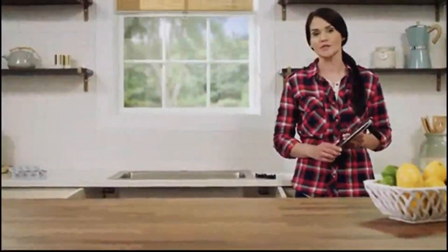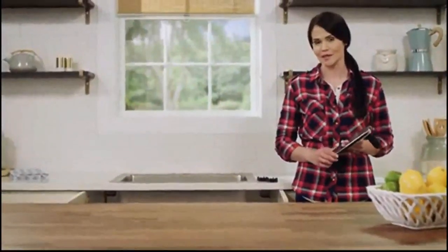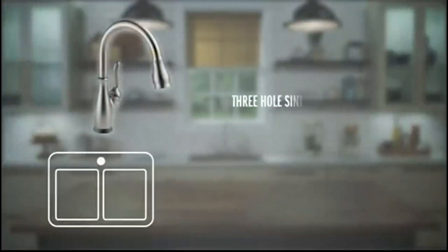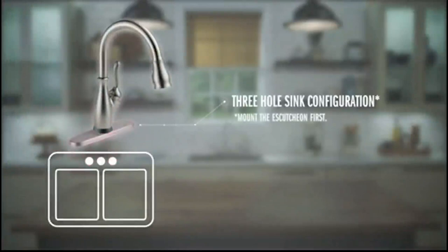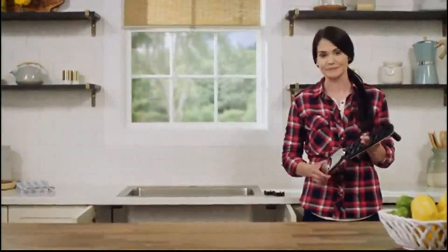The first step is mounting your faucet to your sink or countertop. First, we'll want to identify the mounting hardware included with your faucet. If you have a three-hole sink configuration, mount the escutcheon to the top of the sink first. Depending on your escutcheon, it may need to face a certain way. If so, it will be marked on the base plate. Our install is for a single-hole sink, so we're not going to need the escutcheon for this installation.